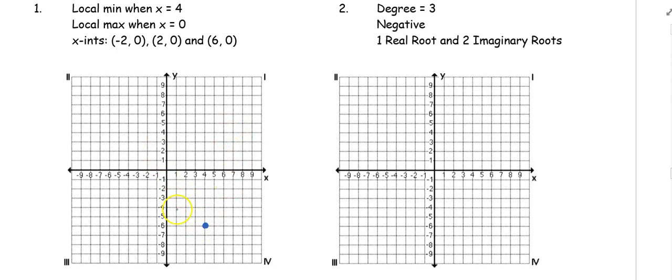I'm going to have a maximum value at 0. So here's x is 0, I'm going to pick 0, 3, why not, doesn't matter. Then it tells me that I have an x-intercept at negative 2, 0, so that's an exact point, 2, 0, and 6, 0.